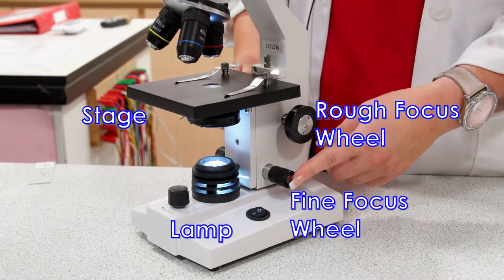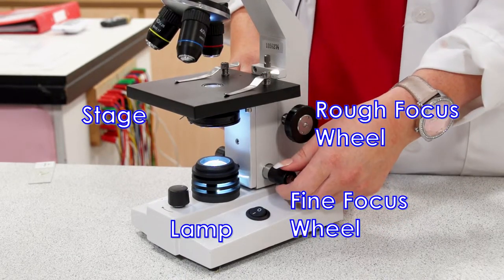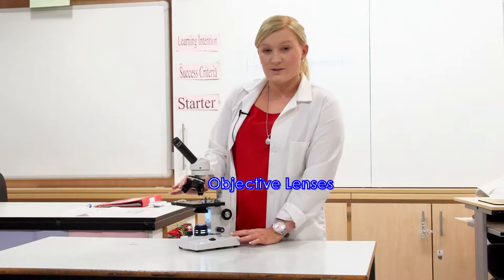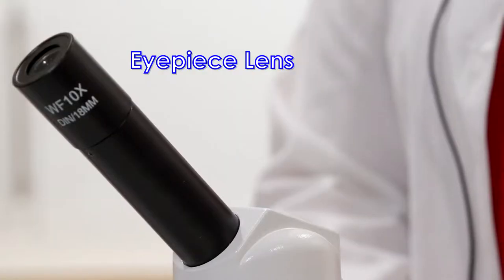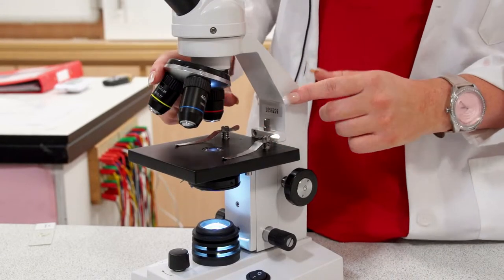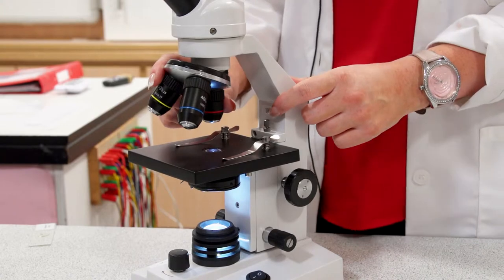You've also got the fine focus wheel, which can make your image clearer. These are our objective lenses. You've got stage clips on the stage—these hold your slide in place. You would look through the eyepiece and through the objective lens. You should always start with the smallest objective lens.